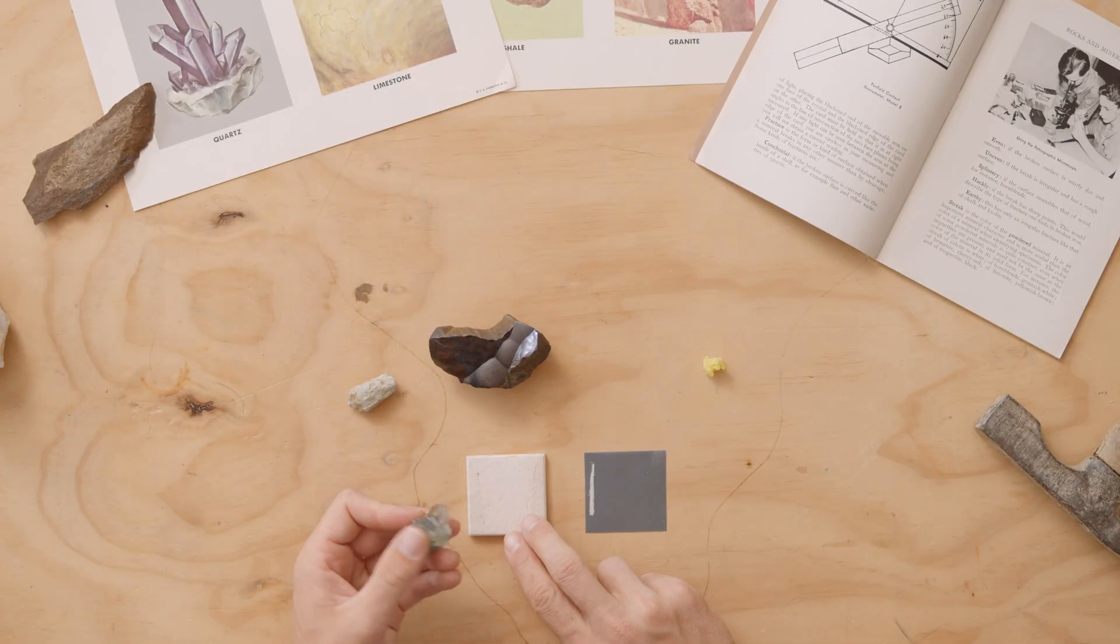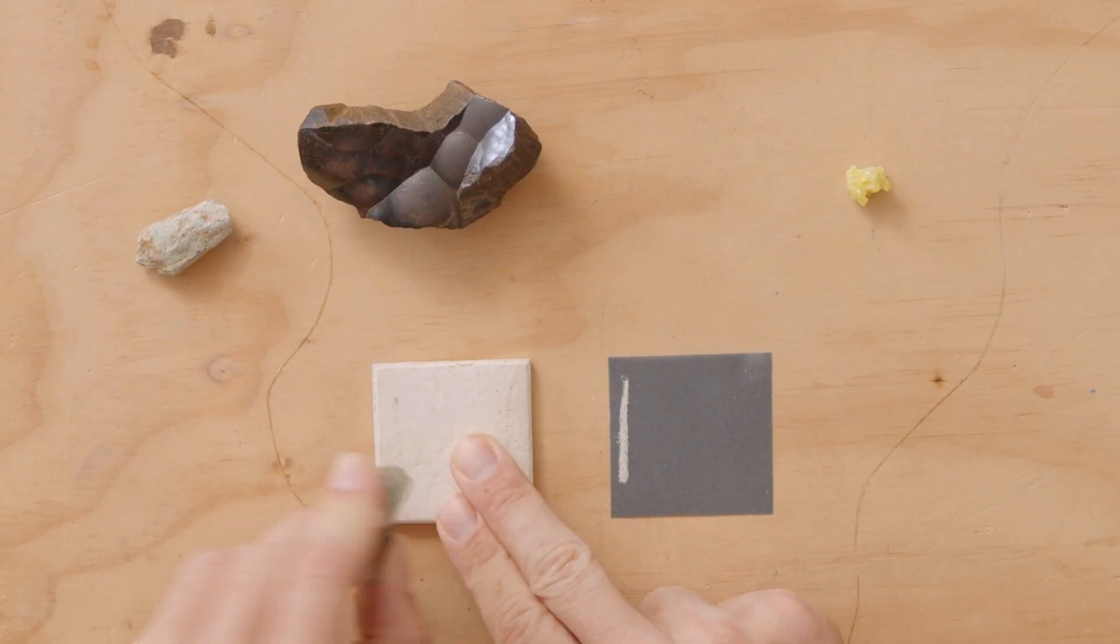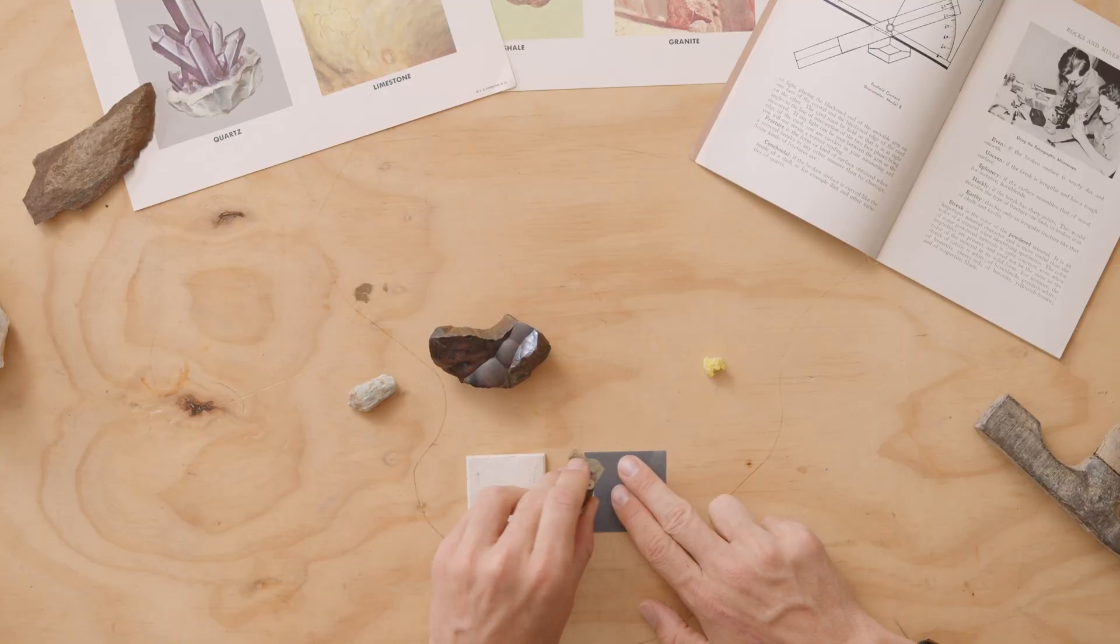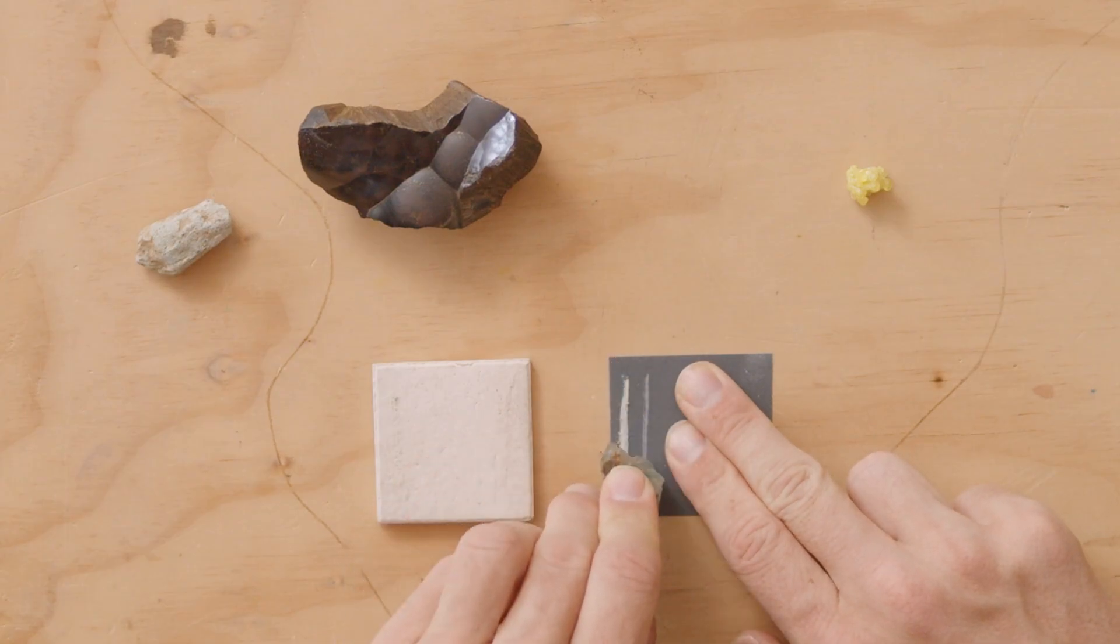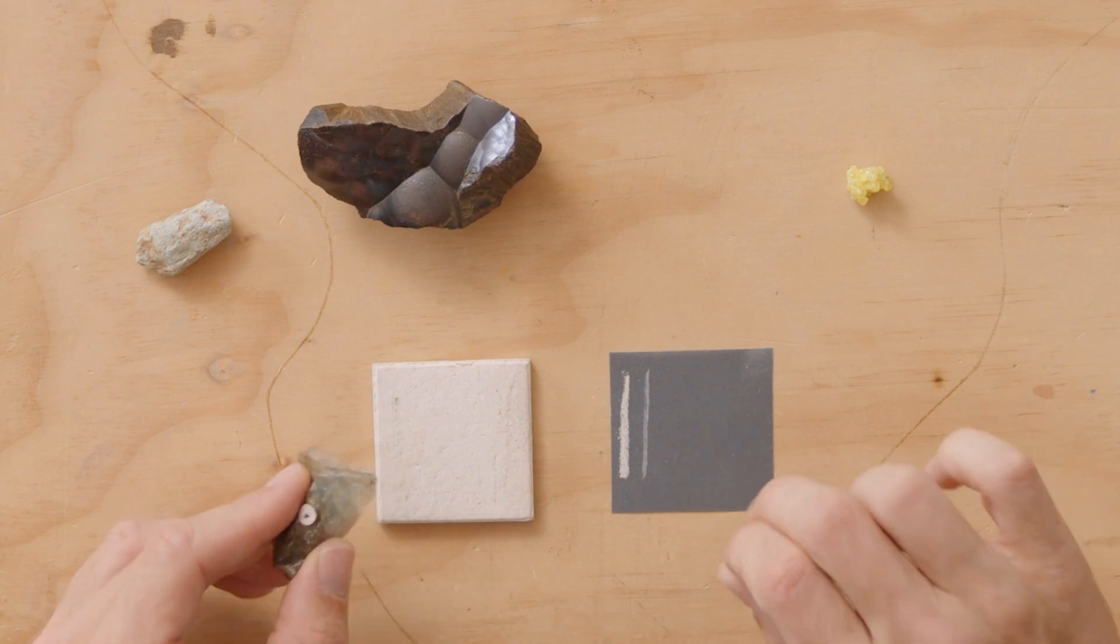Next is fluorite, which is kind of bluish in color, but on the white ceramic it leaves no visible mark. On the black, maybe a slightly blue but mostly a whitish mark.